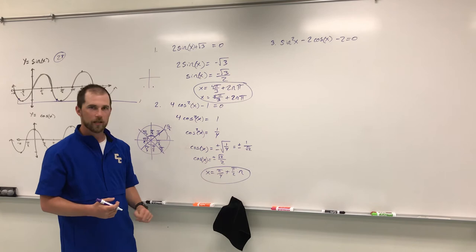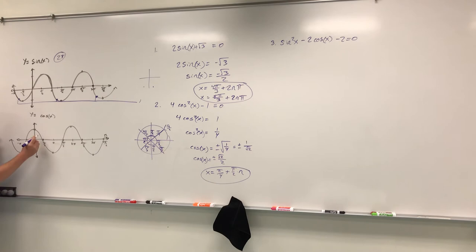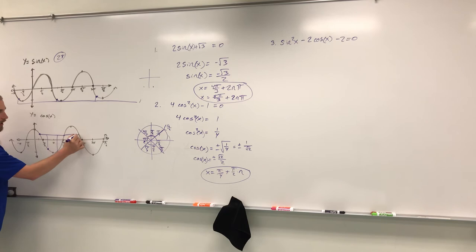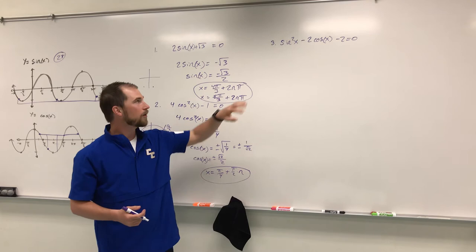You could also simplify it as n pi over two — either form works and makes it easier to recognize. Coming back to the graph, pi over four is right here where cosine is square root of two over two, then negative square root of two over two is pi over two away, and it repeats again and again. So every pi over two is going to work.